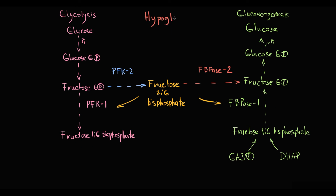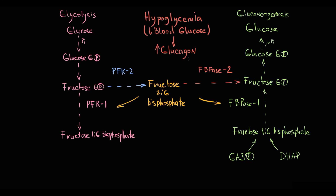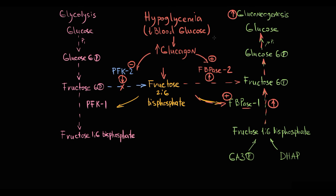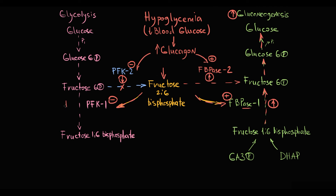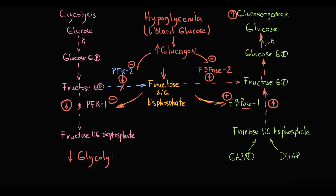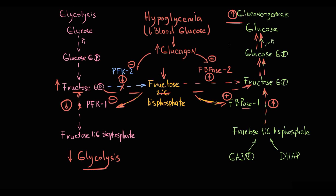If blood glucose levels decrease, hypoglycemia stimulates secretion of glucagon and inhibits secretion of insulin, so the acting hormone is glucagon. Glucagon inhibits PFK2 and stimulates FBPase2, resulting in decreasing fructose-2,6-bisphosphate level. This stimulates FBPase1, so more fructose-1,6-bisphosphate is converted into fructose-6-phosphate, increasing gluconeogenesis activity. Decreasing fructose-2,6-bisphosphate also inhibits PFK1, reducing conversion of fructose-6-phosphate into fructose-1,6-bisphosphate. Inhibition of glycolysis results in accumulation of fructose-6-phosphate that is used in gluconeogenesis. This is the general principle of reciprocal regulation used in glucose metabolism.